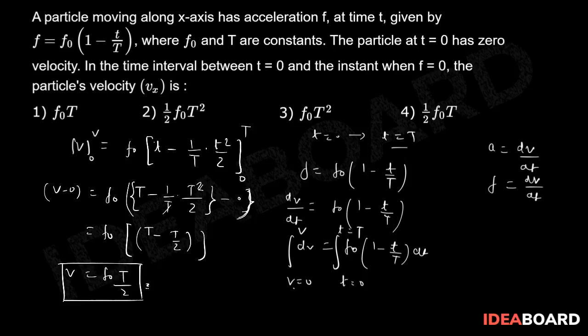It can be written as 1 upon 2 f₀ into T. Let us check: option number 4 says 1 upon 2 f₀ into T, which we have just got. So option number 4 has to be the right choice in this question.